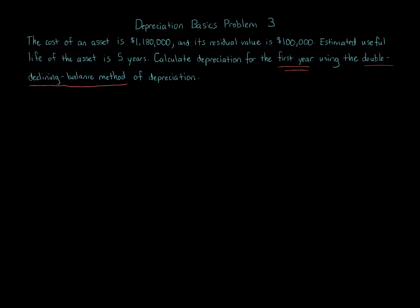There are a few different ways to do double declining balance in terms of formulas — a step approach and a formula approach. I'm going to show you two different ways. The formula that a lot of faculty, textbooks, and exams use is: cost minus accumulated depreciation, times two, times one over the useful life. I'll also show you a step approach that helps you better understand conceptually what's going on.